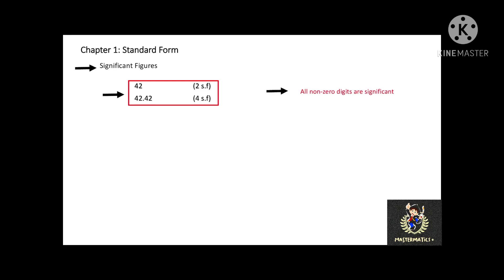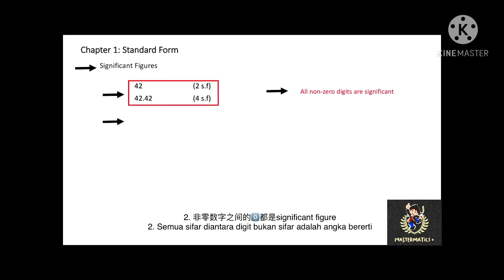Second, all zeros between non-zero digits are significant. Therefore, 4002 is 4 significant figures.